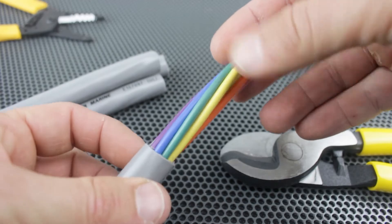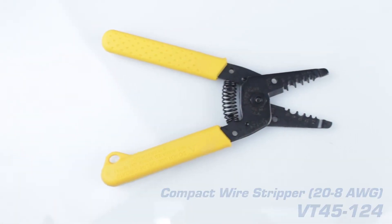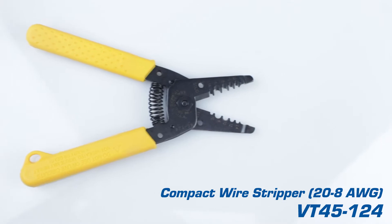Now, we'll use our wire strippers. For this, we'll use our compact wire stripper as it covers the gauge size we'll be working with.